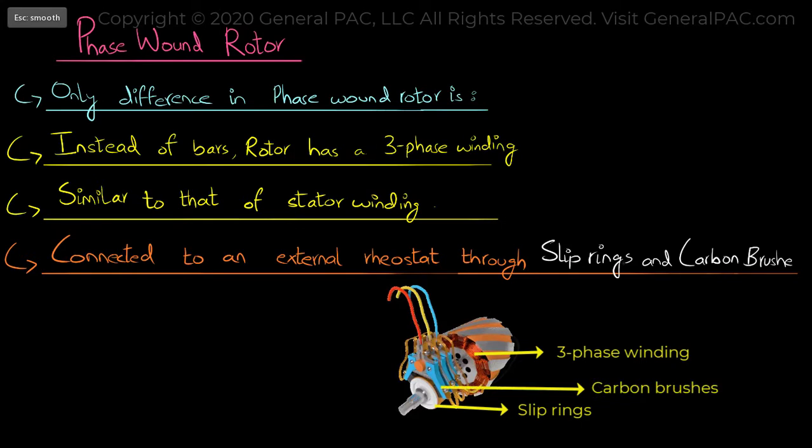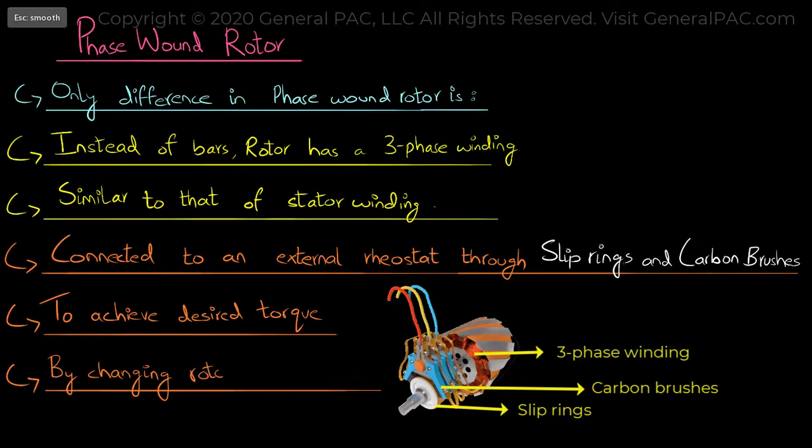Now the purpose of a rheostat, or a variable external resistance, is to achieve the desired torque by changing the rotor resistance.